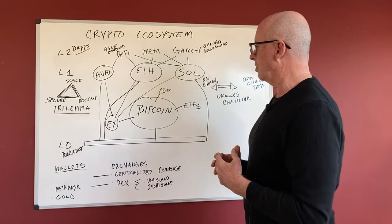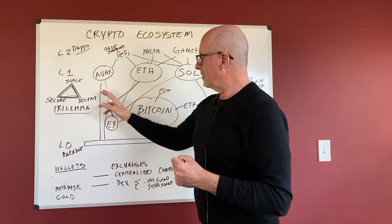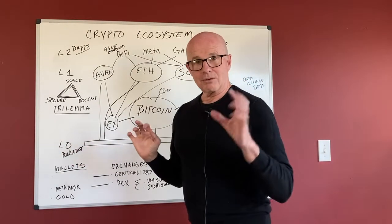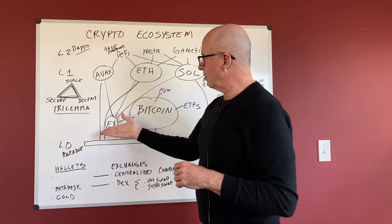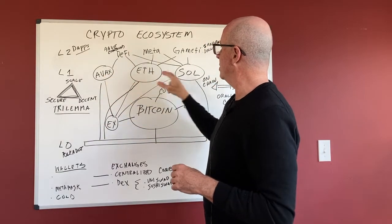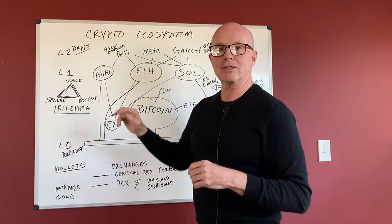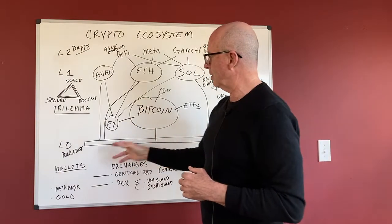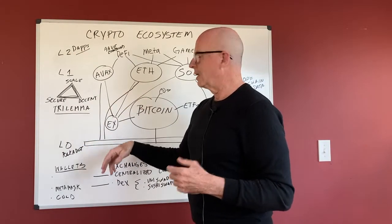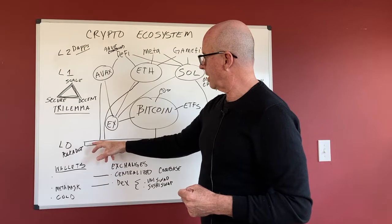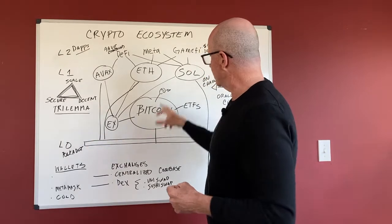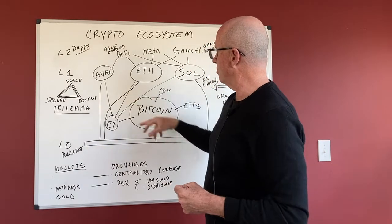And so we have all of those things. And then there's a new thing, the layer zero underneath the layer one. You have all of these discrete blockchains and they don't interact. Well, how can you get them to interact? Well, there's layer zero applications that are coming out, platforms where all of these can be connected so you can swap from one to the other.